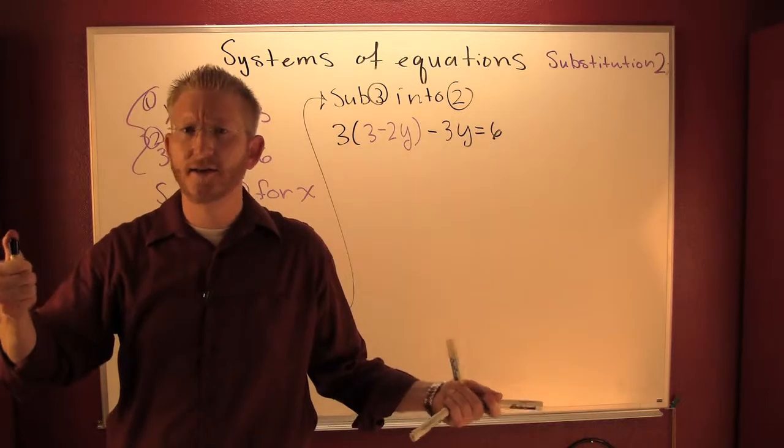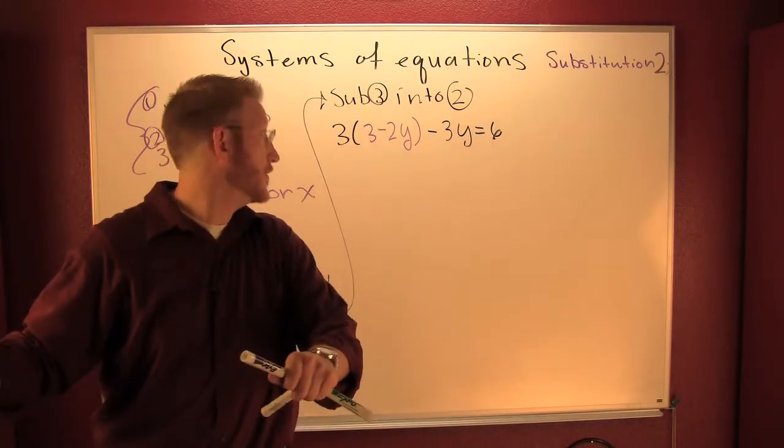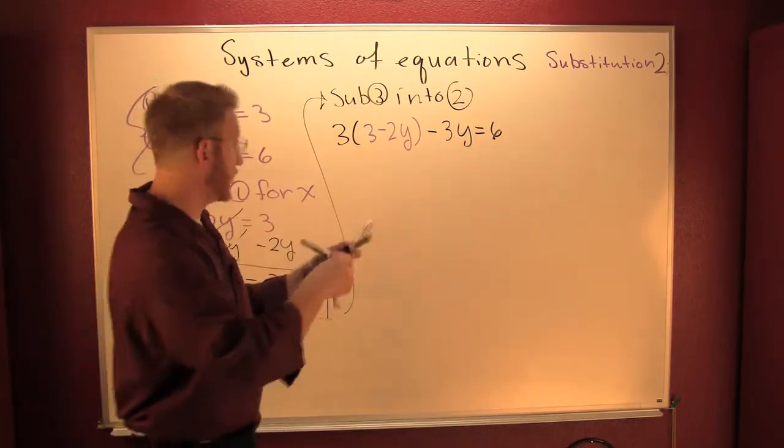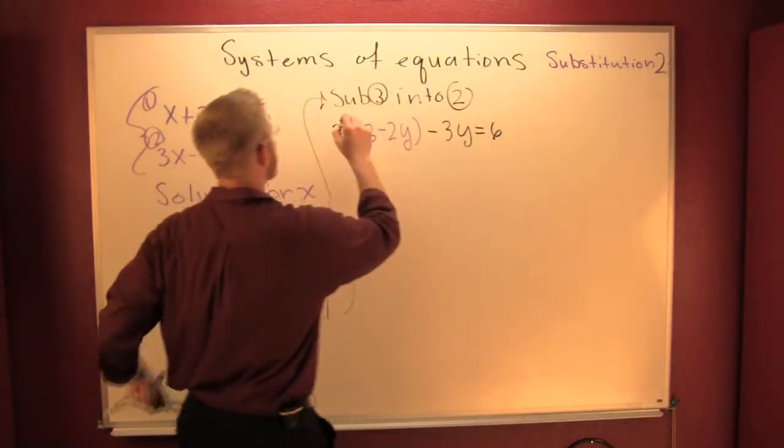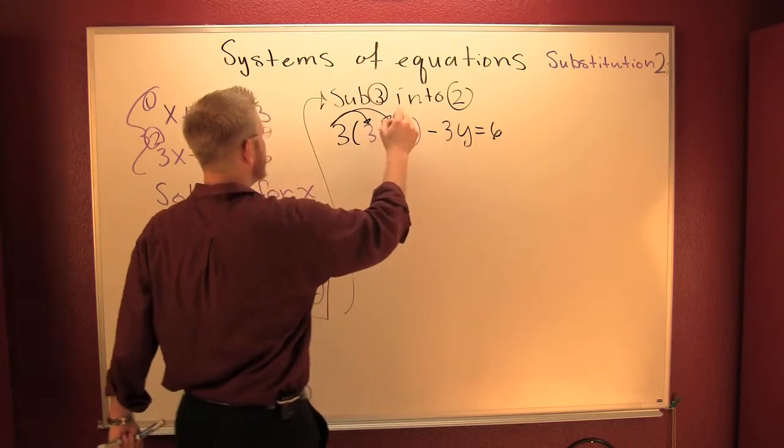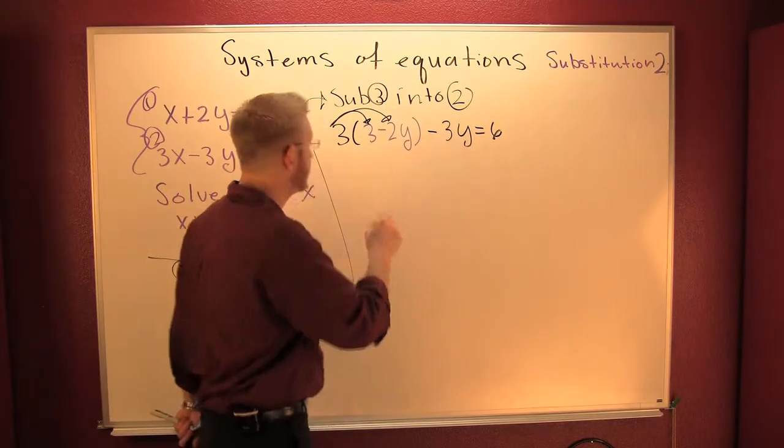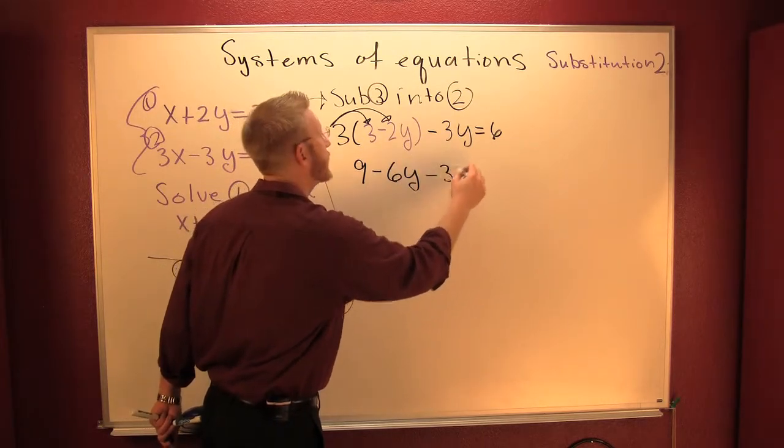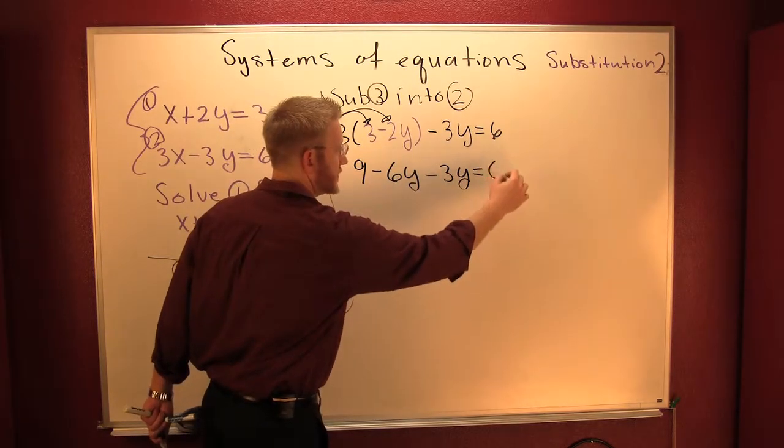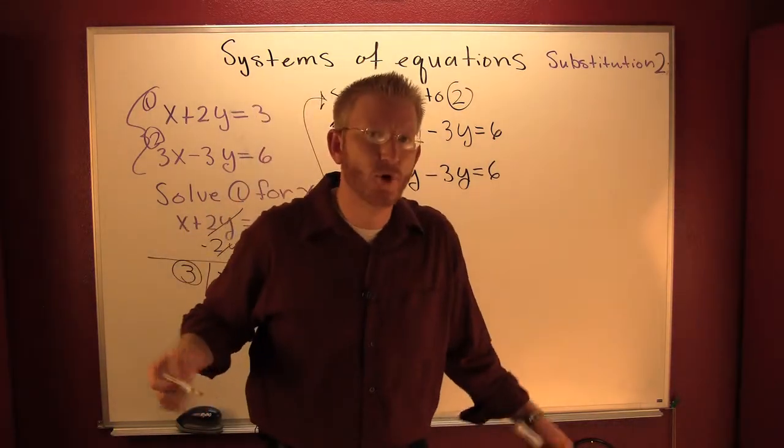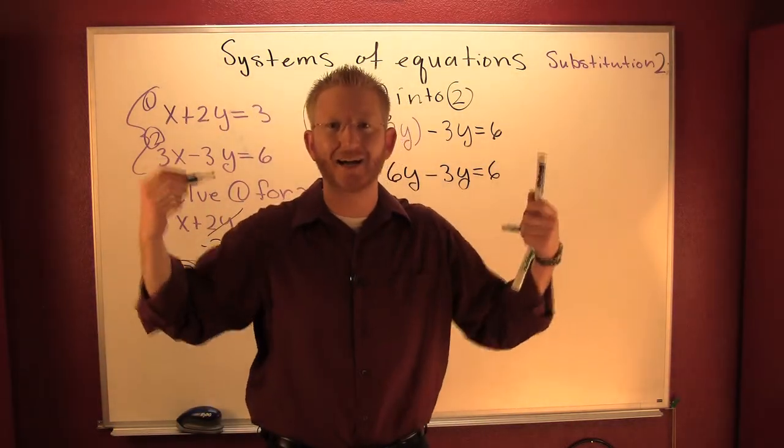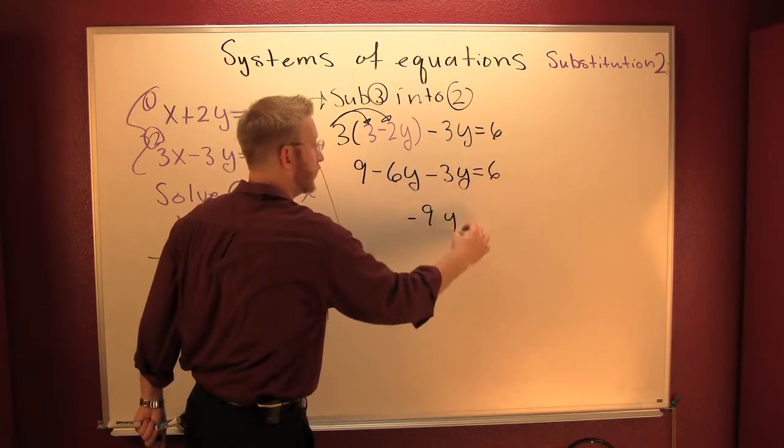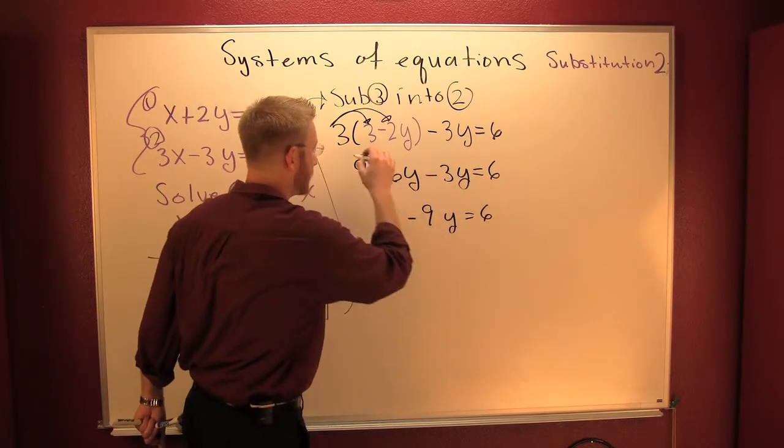Let's solve for Y. So first thing we're gonna do is we're gonna consolidate, then we're gonna get our Y's on one side and our numbers on the other, and then we're gonna divide. And then you got nine minus six Y minus three Y is six. But wait there's more. Anybody see any like terms? I do. Minus six and minus three is a minus nine Y is six.